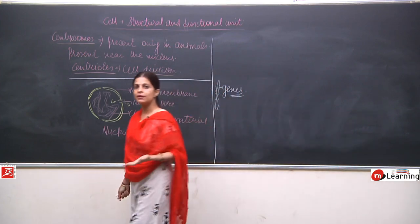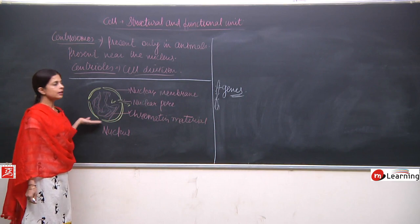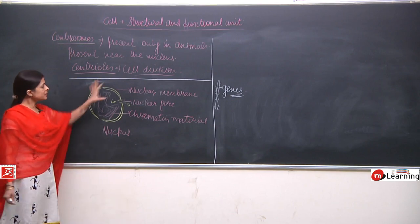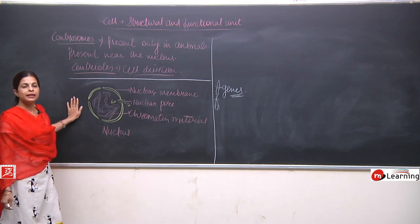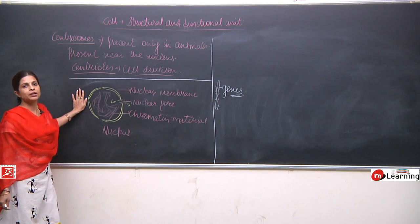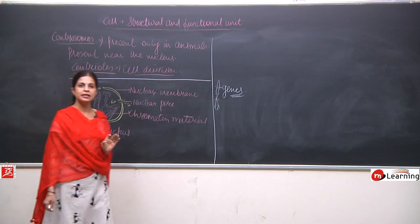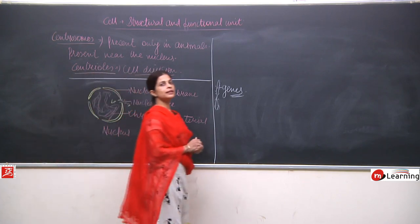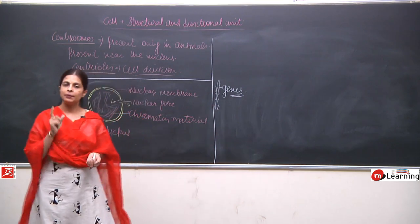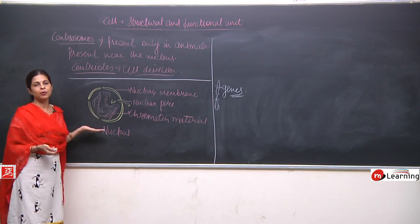Genes carry all the information that is transferred to the next generation, which is why children resemble their parents and siblings. In the animal cell, the nucleus is present in the center and forms the major part of the cell. In the plant cell, due to the presence of a large vacuole, the nucleus gets shifted to one side, but it plays the same role in both cells.